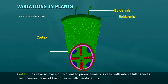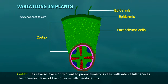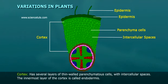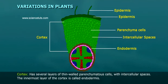Cortex has several layers of thin-walled parenchymeter cells with intercellular spaces. The innermost layer of the cortex is called endodermis.